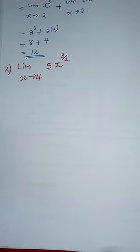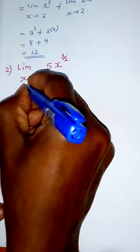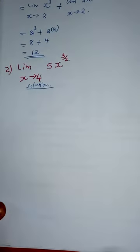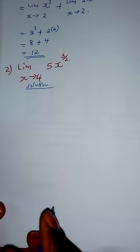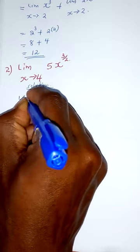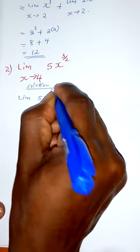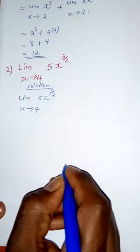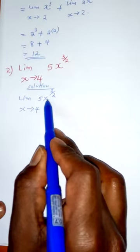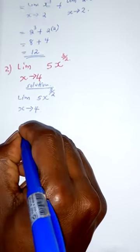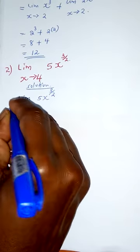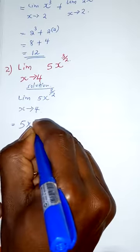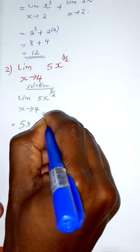Example number 2: we have 5x to the power of 3 over 2 when x is approaching 4. For the solution, we take the limit of 5x^(3/2) as x approaches 4, and we replace x with 4: 5 multiplied by 4 to the power of 3 over 2.